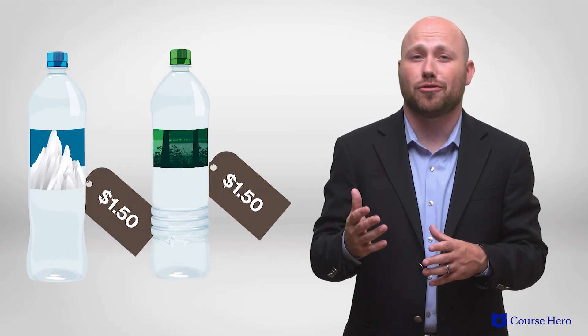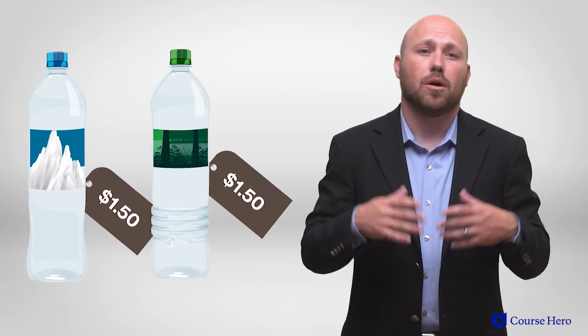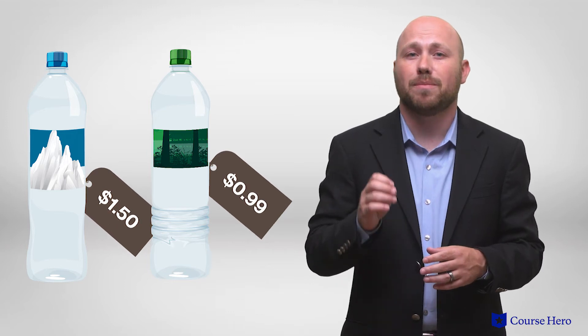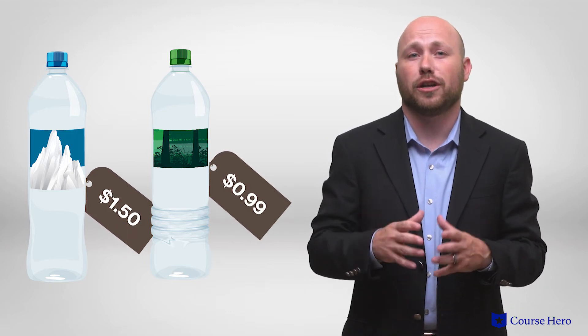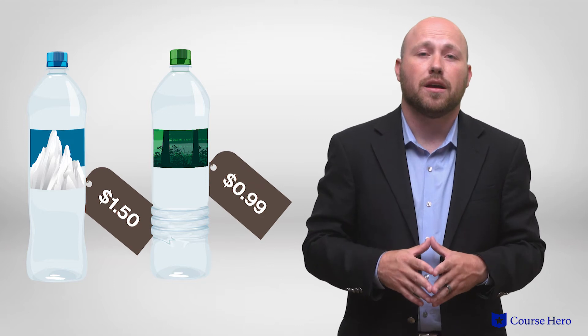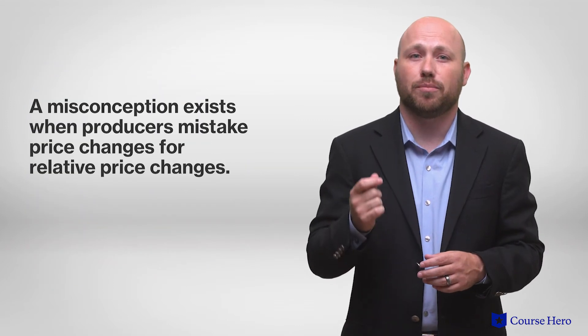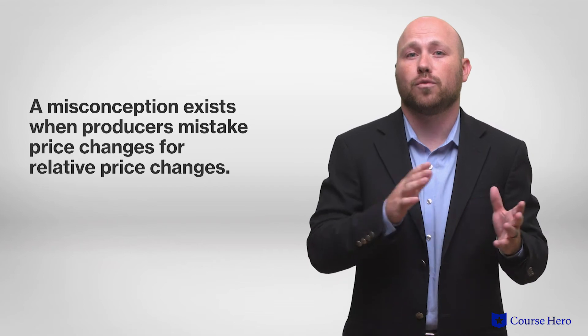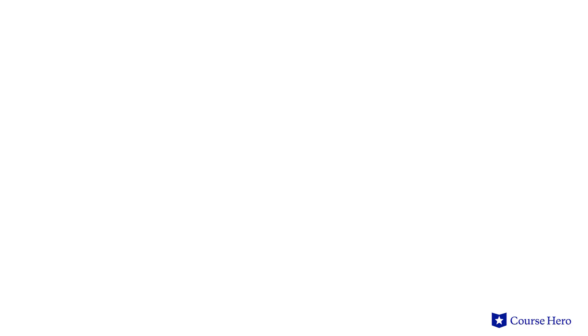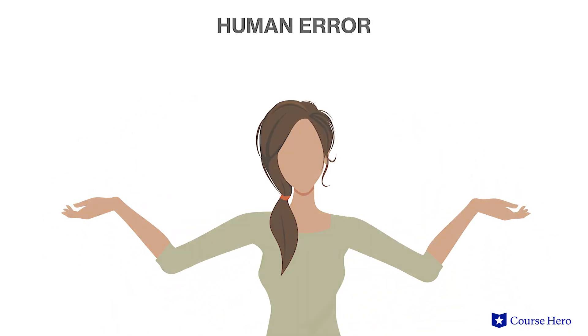Companies may set prices at one point only for an economic downturn to strike soon afterward. While some companies might reduce prices immediately, others might be slow to do so out of fear of incurring large menu costs. The third theory states that misconceptions exist when producers mistake price changes for relative price changes, ultimately attributing the upward slope to human errors in decision making. Producers respond to these misconceptions of relative price changes by increasing or decreasing production.